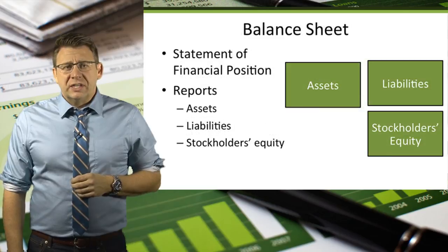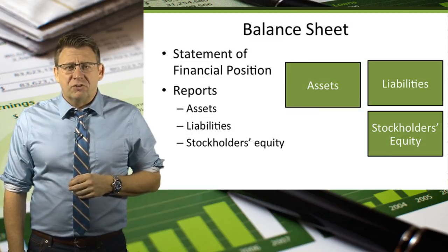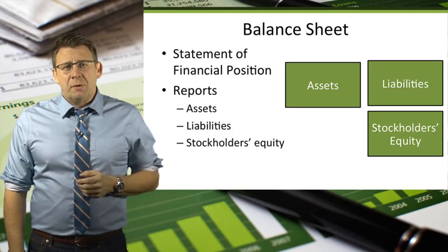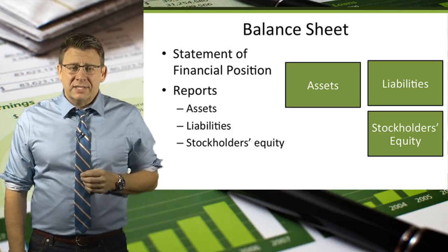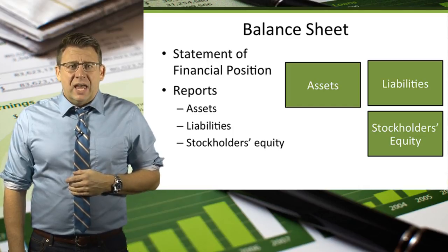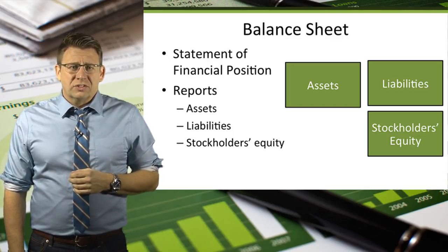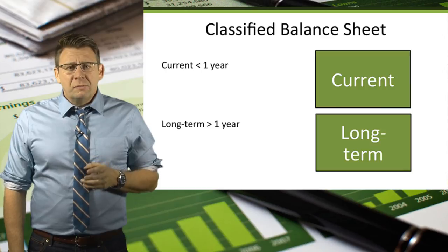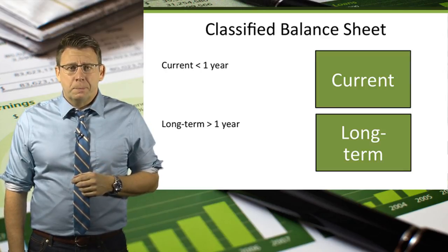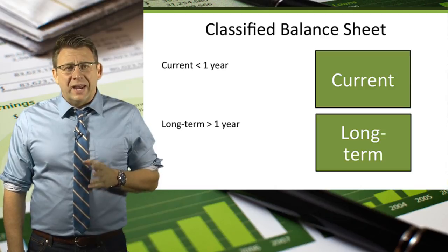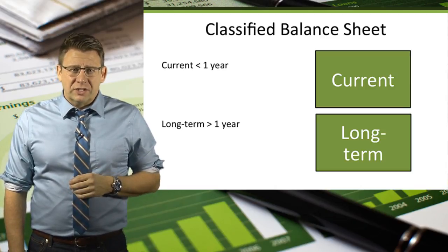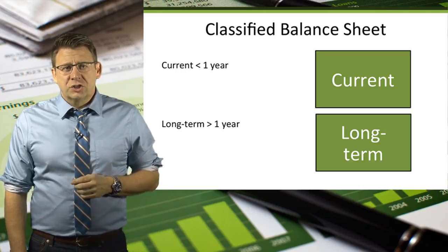A balance sheet is sometimes called a statement of financial position, meaning at any point in time it tells us how many assets a company has, how many liabilities or debts a company has, and how much equity the stockholders have. The most common form of a balance sheet is the classified balance sheet. In this format, assets and liabilities are classified into two categories: current and long term.